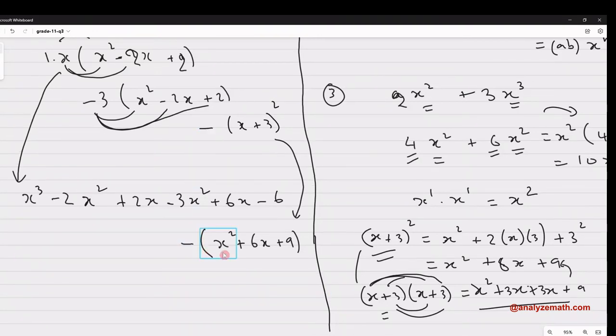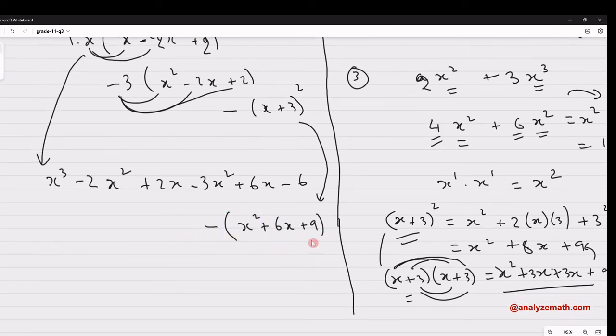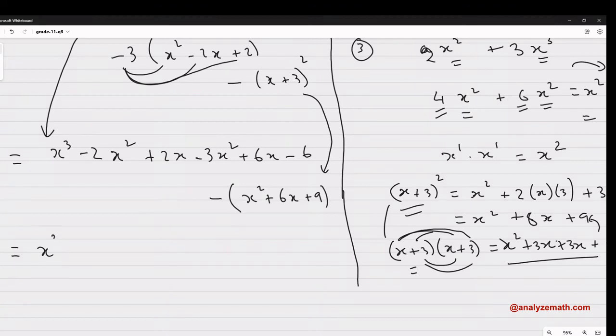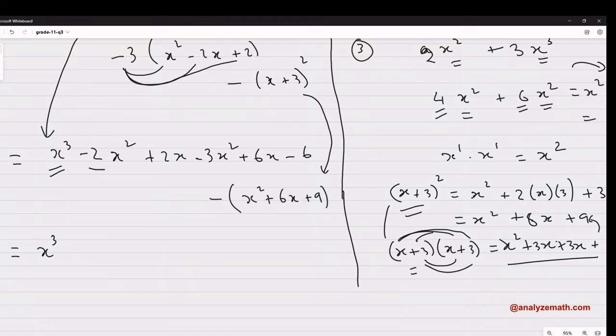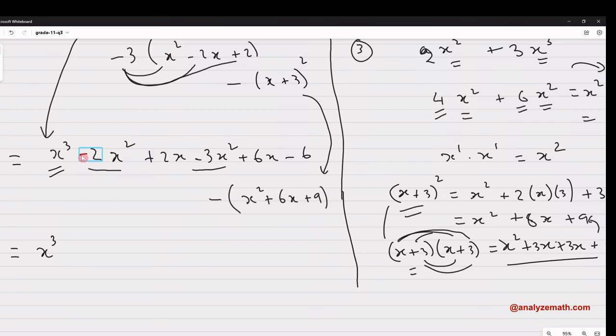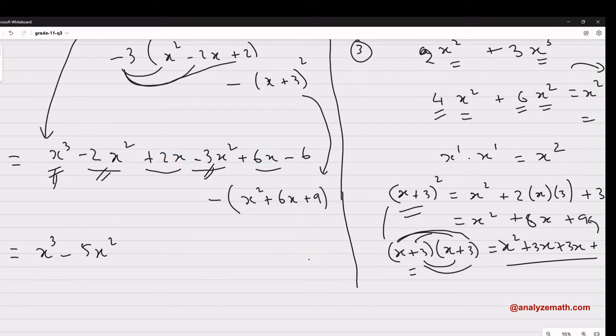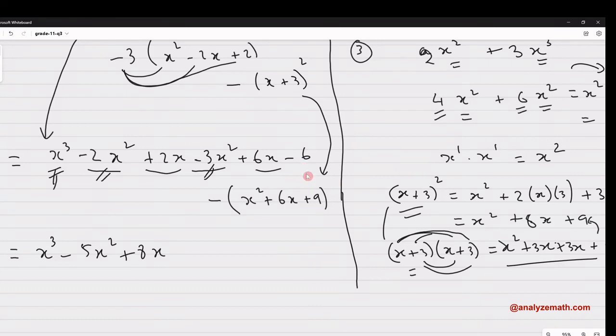Now look, I have a minus, I put a bracket. Otherwise it will be completely wrong. Remember, the minus is in front of the whole expression. Now let's continue. We have x³ here. Now we can start grouping. I have minus 2x² minus 3x². They both are monomials with the same variable to the same power, x², x². I can group, minus 2 minus 3, minus 5x². And then I have 2x plus 6x. Again, it's a monomial with x to the power of 1, same power. I can group plus 8x. Constant, minus 6.